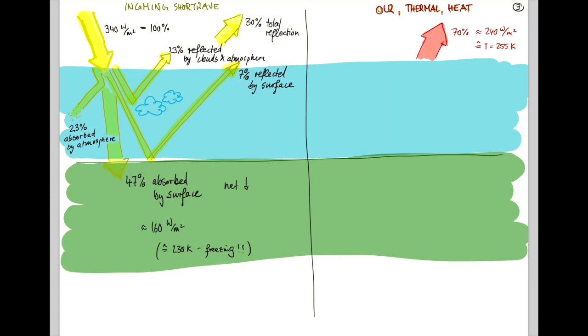That's what gets radiated back to space at the top of the atmosphere. And that makes sense, right? We get 100% or 340 watts coming in, then 30% get reflected and 70% get re-emitted.